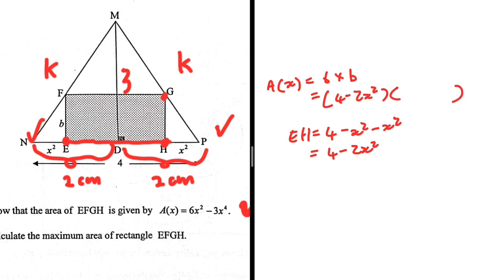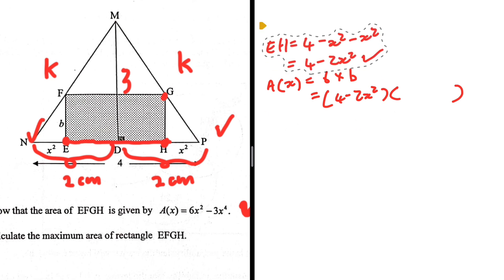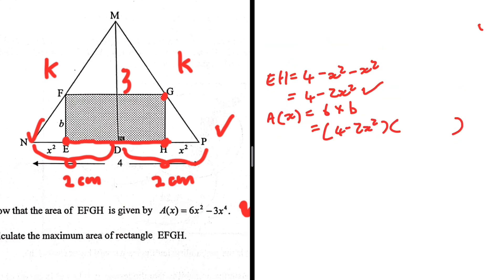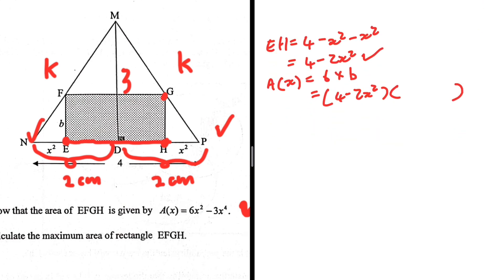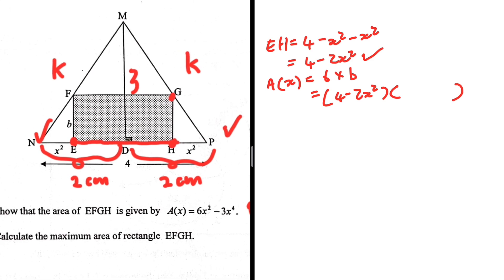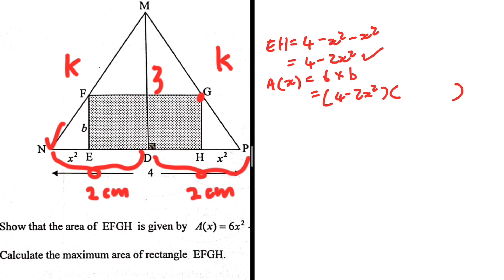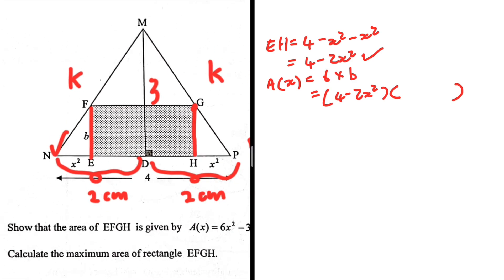We have the length EH = 4 - 2x². Now all we need is the breadth to express the area in terms of x. We need the length of EF or GH. To find that, we are going to use the fact that triangle NEF is similar to triangle NDM.